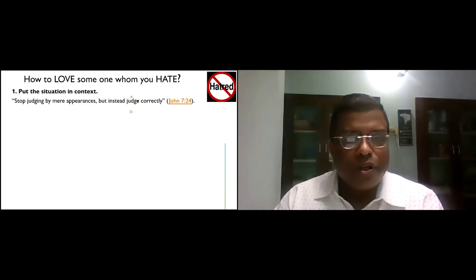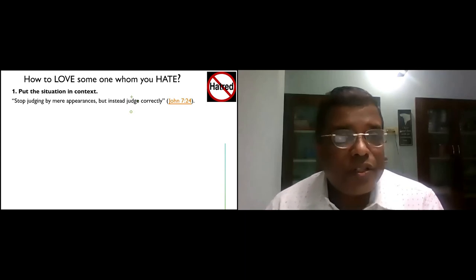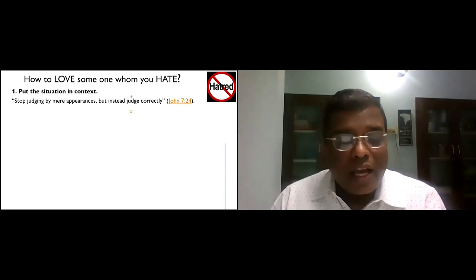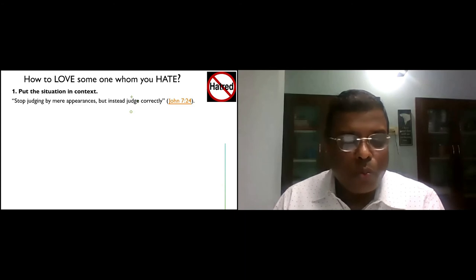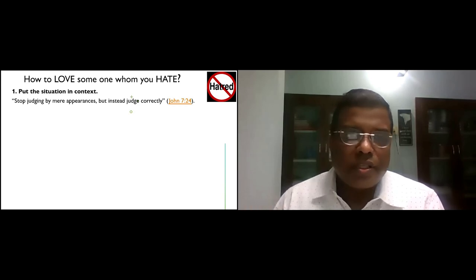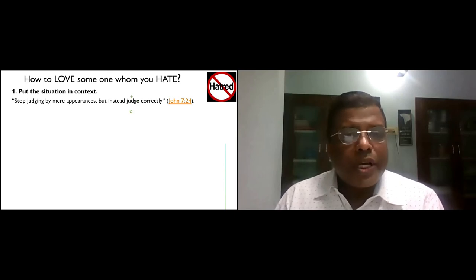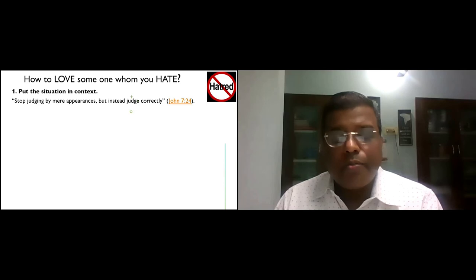John was Jesus' best friend. He makes it clear that you can't love God and hate God's people. And guess what? All people are God's people. If we love God, we have to love others also. So, how do we love those we hate? I'd like to leave you with four points. It's a very big subject, but I'd like to take out some four points out of this so that we at least can correct our very nature, our very thought process and see how we can overcome this emotion of hate in ourselves. Put the situation in context. Stop judging by mere appearances, but instead judge correctly, John 7:24 says.